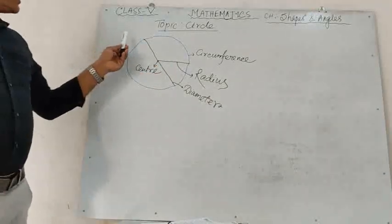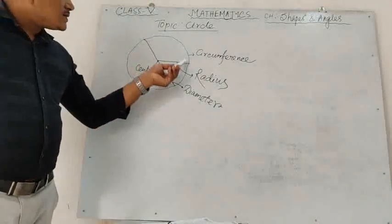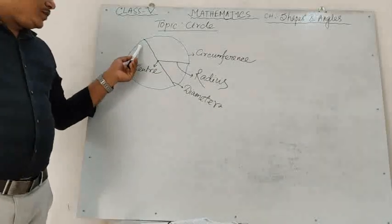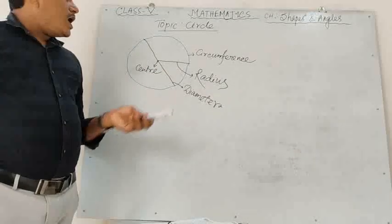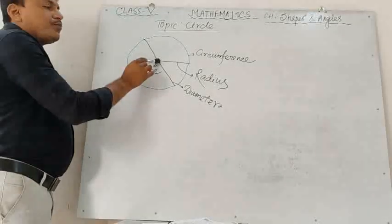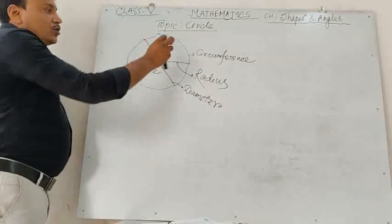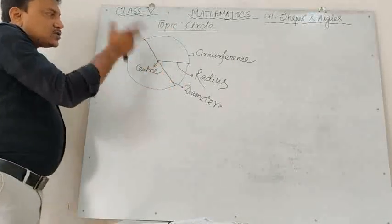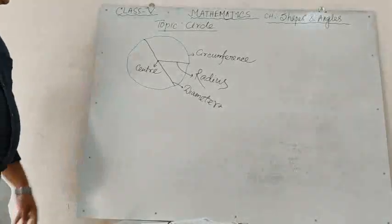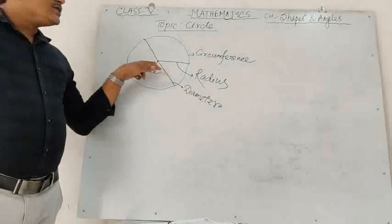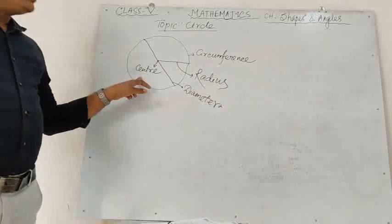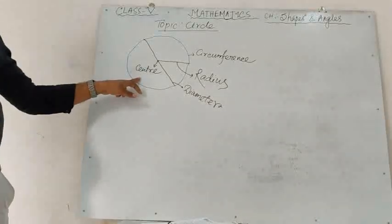A circle is a set of points on a plane which are equidistant from a fixed point. The fixed point on the plane is called the center of the circle.